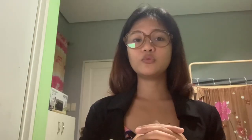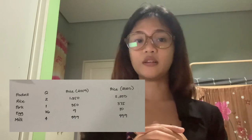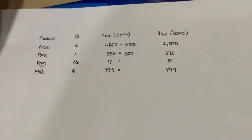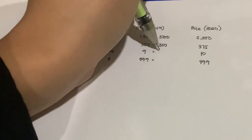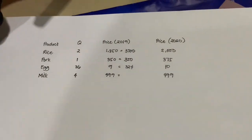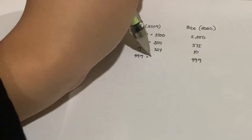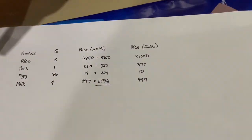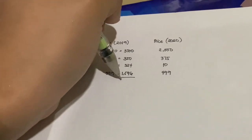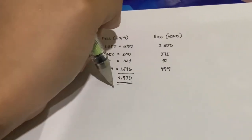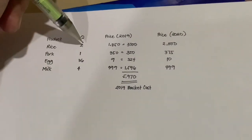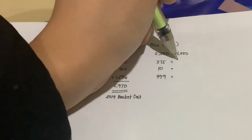I'm going to show you an example beside me. First, we're going to compute the 2019 market basket cost, which is our base year, and then the 2020 market basket cost, which is our current year. In computing the market basket cost of the base year, we're just going to multiply the quantity by the price of the base year, the same with the quantity and the price of the current year.